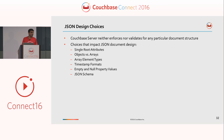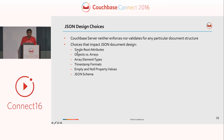What are the various choices that impact your JSON document design? There's a choice between single root attributes or the type parameter. There's a choice between objects and arrays — when do you go with an array, when do you go with objects? Array element types. How about timestamps? That's one of the most challenging things when dealing with JSON. Empty versus null versus missing attributes — it's quite possible that some documents do not have an attribute. And JSON schema: how do you enforce a schema on a JSON document?